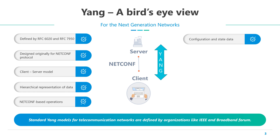Any device that is being managed will have two types of data. One which can be modified by the managing entity, and second, which can only be observed by the managing entity. The data which can be modified is called the configuration data, and the data which can only be observed is called the state data. Yang supports both of these.